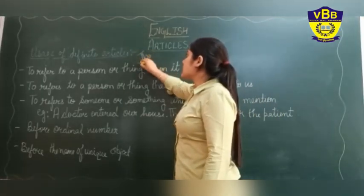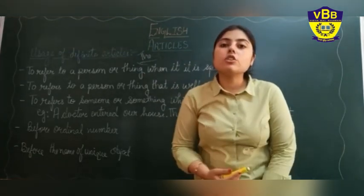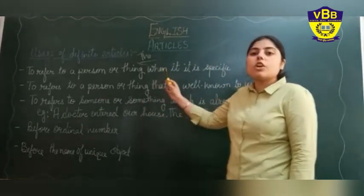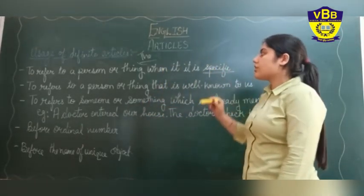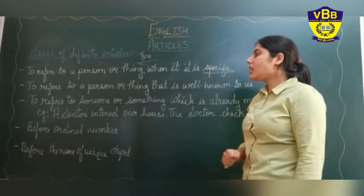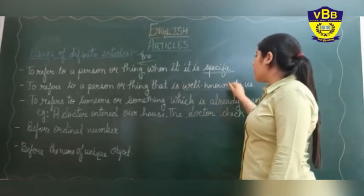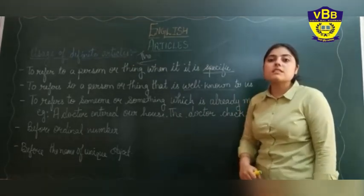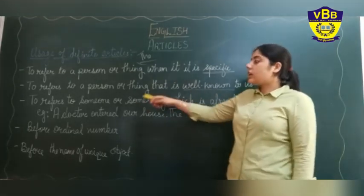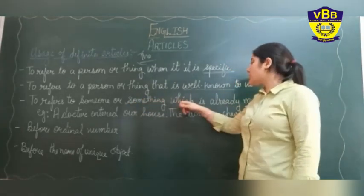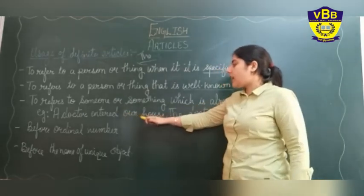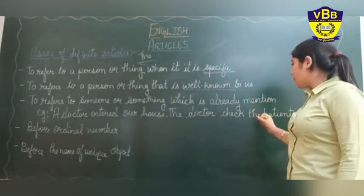Our definite article is 'the'. Now we will see where we can use article 'the'. First, when we are talking about any particular or specific person, place, or thing, we can use article 'the'. Second, when something is very well known or very famous, we use 'the'. Third, to refer to someone or something which is already mentioned — for example: 'A doctor entered our house. The doctor checked the patient.'